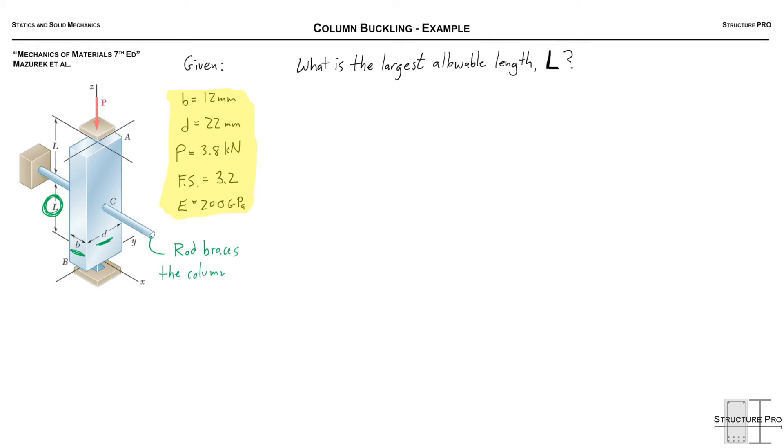So this rod braces the column in a certain way and we can see that it braces it in the XZ plane. If you can imagine this column could still buckle in one plane at C but not in the other. So it's just braced in the XZ plane.